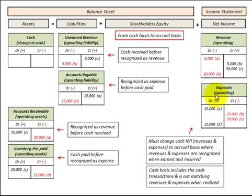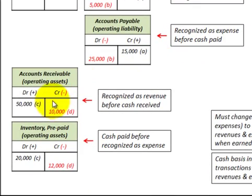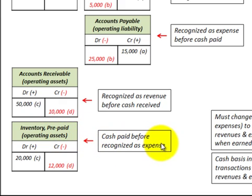With the cash basis, it included only cash transactions and did not match revenues and expenses when they were realized. The accounts we have to deal with include liability accounts like unearned revenue — where cash is received before it's recognized as revenue — and accounts payable, recognized as an expense before cash is paid. On the asset side, accounts receivable is recognized as revenue before cash is received, and inventory and prepaid expenses are where cash is paid before they're recognized as expense.